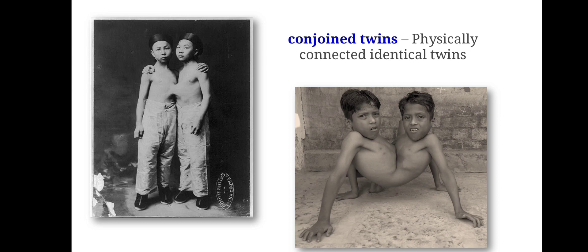Conjoined twins occur under two possibilities: either the single fertilized egg does not split completely during the formation of identical twins, or two fertilized eggs fuse together earlier during the developmental stage — in the starting stage, the fertilized eggs fuse together. These two conditions result in conjoined twins.